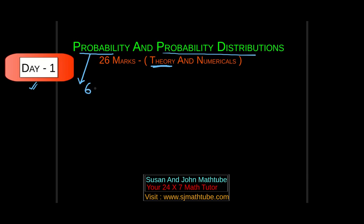Every year the mark distribution changes a little bit, so this year maybe they'll ask for five or four marks. But normally they ask a six mark question. You can expect basic theory questions like: what do you mean by mutually exclusive events, independent events, dependent events, exhaustive events, and conditional probability — with examples.